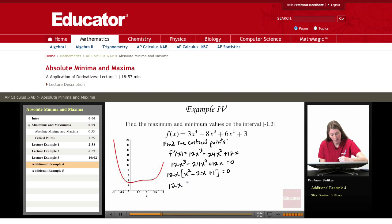So I have 12x times (x minus 1) squared equals zero, so we're getting critical points x equals 0 and x equals 1.